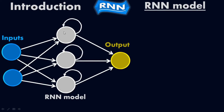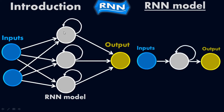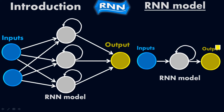In short form, we can also write this diagram — it is also the RNN model. Look, this is the input, this is the hidden layer, and this is the output layer. Instead of drawing the whole neural network, you can simply demonstrate the RNN in this simple diagram, where it shows the input layer, the hidden layer, and the output came out from here.